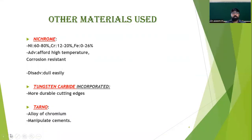Other materials used include nichrome, tungsten carbide, and tarno. Nichrome contains nickel 60–80%, chromium 12–20%, and iron 0–26%. Its advantages include withstanding high temperatures and corrosion resistance, but it dulls easily. Tungsten carbide is incorporated into hand instruments to enhance cutting edges and improve durability. Tarno is an alloy of chromium particularly used for fabrication of cement mixing instruments.